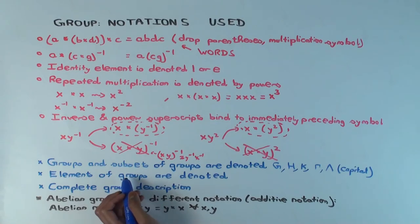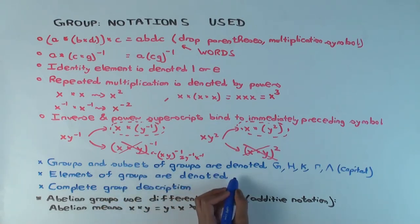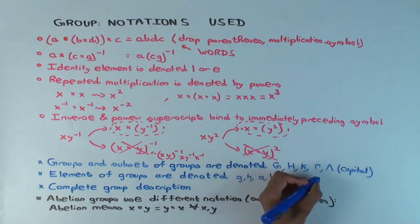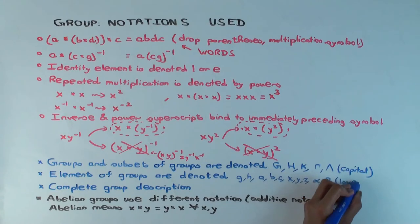Elements of groups are denoted by what? Lowercase letters like what? Little g, little h, maybe A, B, we've been using A, B, C, X, Y, Z, anything you want. Maybe alpha, beta, lowercase.